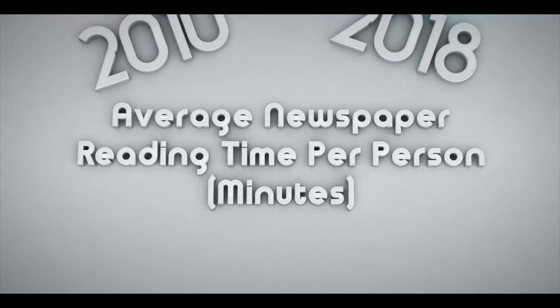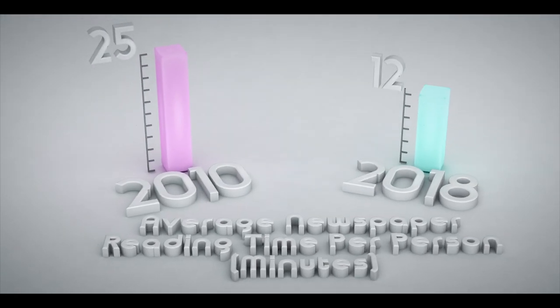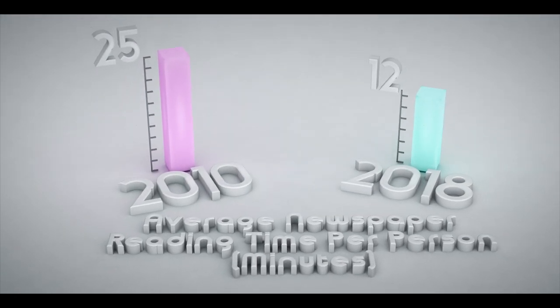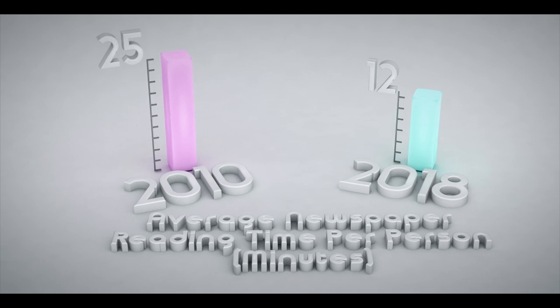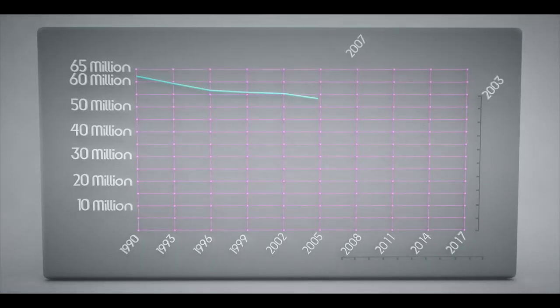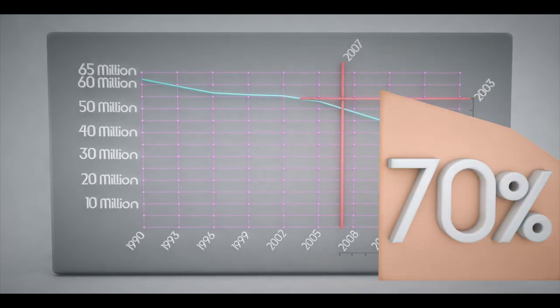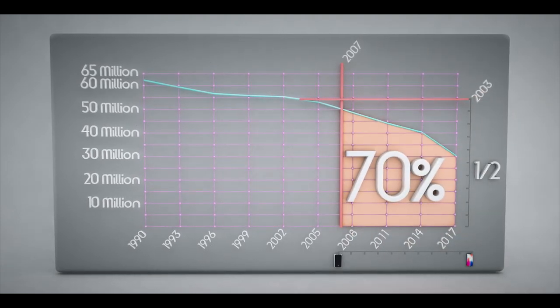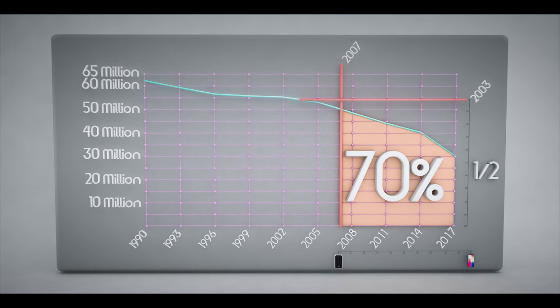Regarding traditional newspapers, between 2010 and 2018, traditional newspaper reading time per capita has been cut in half in the U.S., from 25 to 12 minutes, and the circulation of traditional newspapers has been cut in half since 2003, with 70% of this decrease happening since 2007, the same year the original iPhone was released.